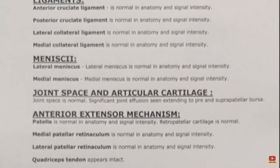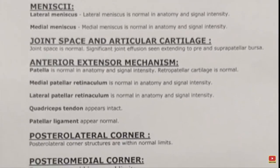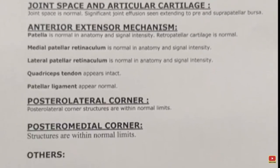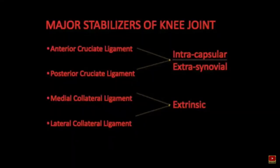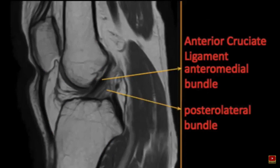This is the format I follow step by step while reporting an MRI knee. Number one, I see the ligaments. The four basic ligaments I assess are the anterior cruciate ligament, posterior cruciate ligament — which are the intracapsular extrasynovial ligaments — and then the collaterals. The ACL has two bundles: anteromedial and posterolateral. For any ligament pathology, we look for three things: ligament contour, disruption of fibers, and any abnormal signal.